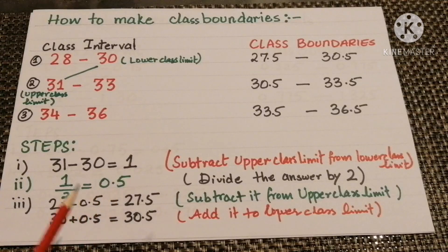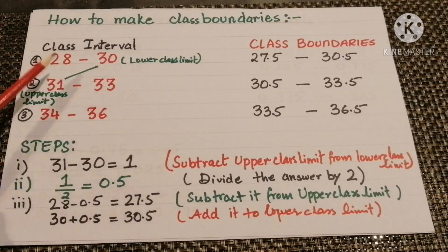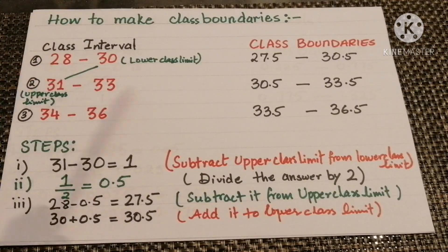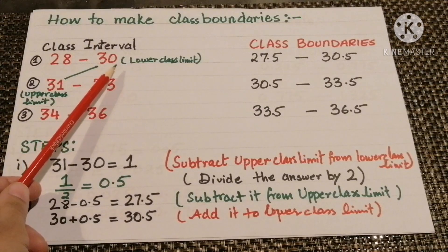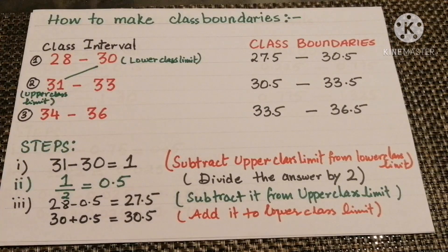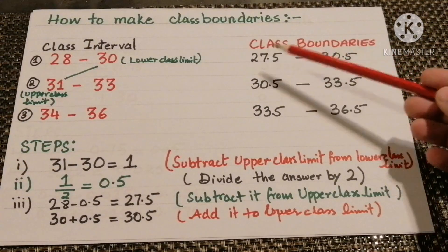Now we divide this number by 2, which gives us 0.5. We will subtract 0.5 from the lower class limits and add 0.5 to the upper class limits in order to make the class boundaries.